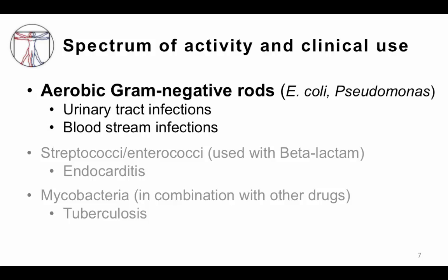In terms of spectrum of activity and clinical use, aminoglycosides are primarily active against aerobic gram-negative rods, for example E. coli or Pseudomonas. They are used for urinary tract infections or bloodstream infections. But given the toxicity issues, they're used much less frequently in practice these days because we have other good drugs against these bacteria that are less toxic.